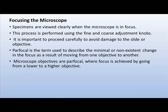Focusing the microscope: without focusing on the specimen it is impossible to observe details. Specimens are viewed clearly when the microscope is in focus. Any slight disturbance can make a big problem for observation. Before focusing, place the microscope on a vibration-free table or suitable place. Avoid touching the microscope body parts. The focusing process is performed using the fine and coarse adjustment knobs. It is important to proceed carefully to avoid damage to the slide or objective. Perform coarse adjustment first, then do fine adjustment.